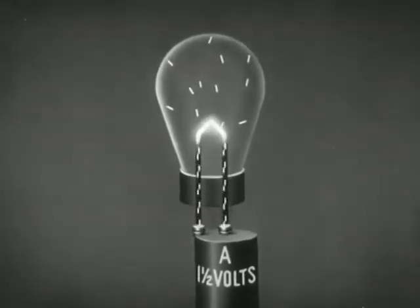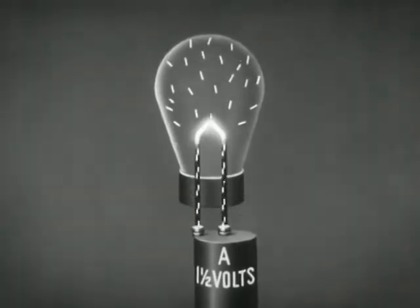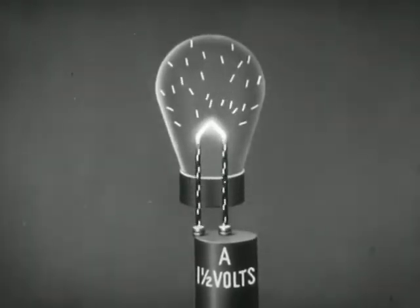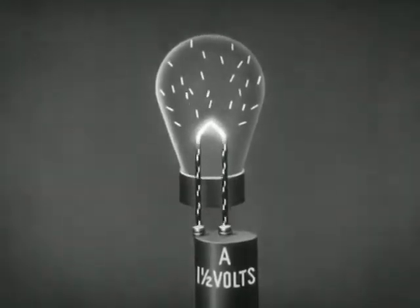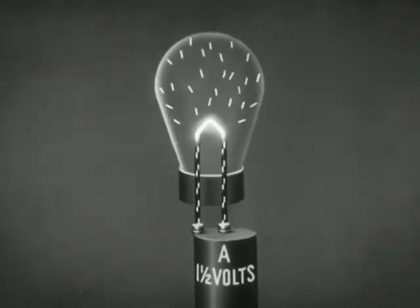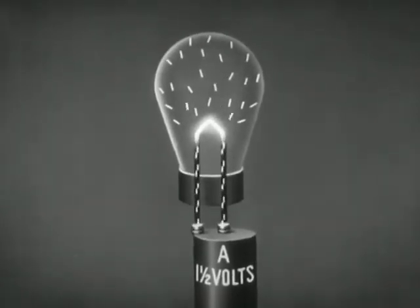The electrons build up a space charge in the tube. As the charge builds up, electrons are repelled back to the filament, and finally as many return as leave.